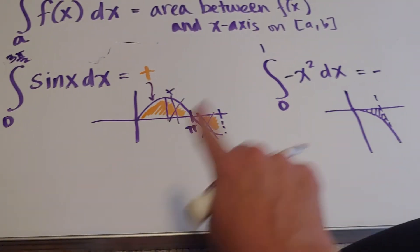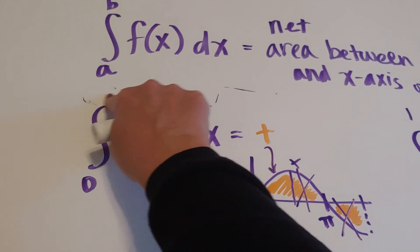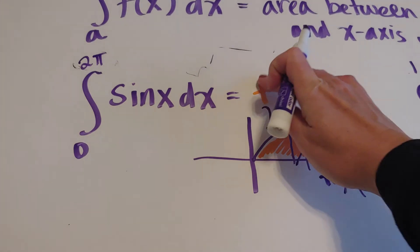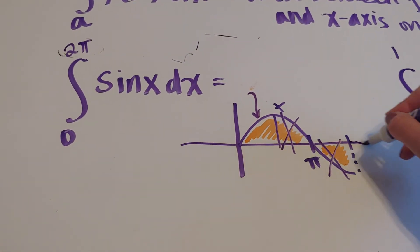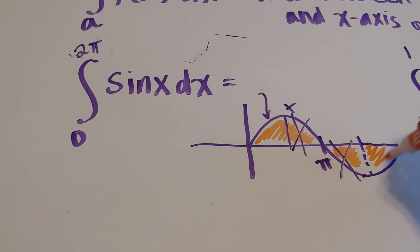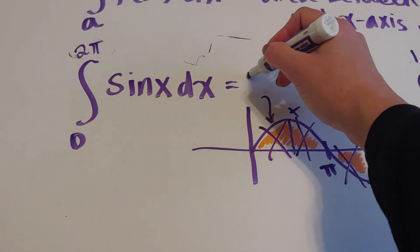And you're probably thinking, well, Jen, you didn't show an example of 0. All right. How about that? From 0 to 2π, right? Because if we went from 0 to 2π, we are going to get a net of 0.